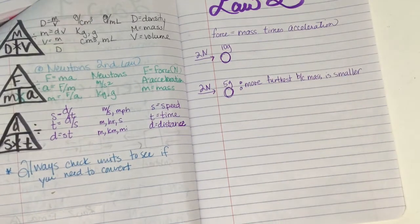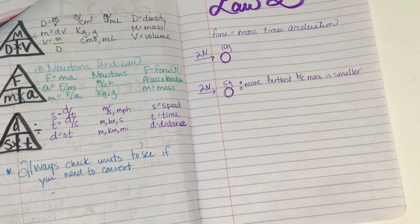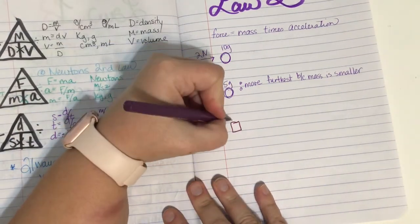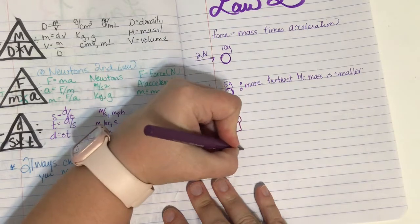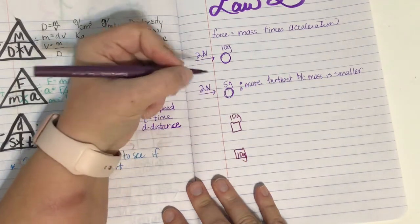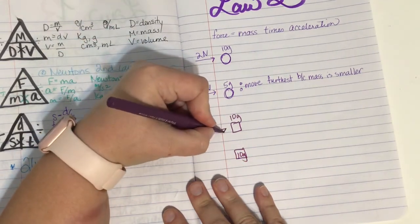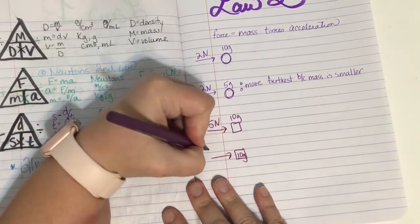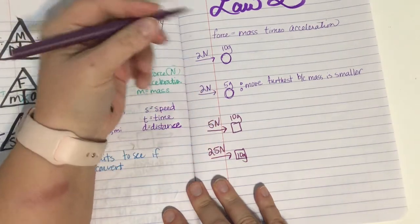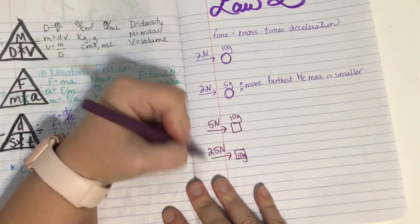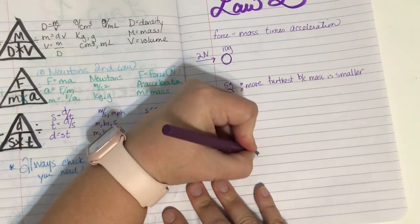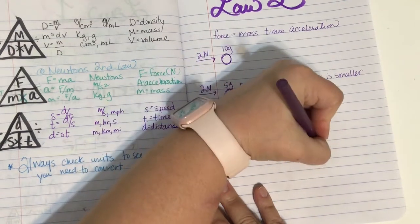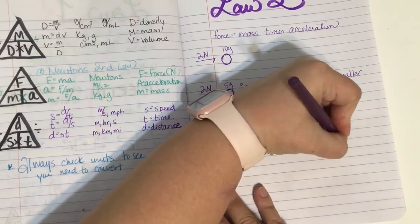Let's look at another way that we can think about this law. So this time I have two boxes and they are both 10 grams. So one there and one here. And this time I put a force of five Newtons and I put a force of 25 Newtons. This time the mass is the same. The only thing that is different is the amount of force being used. This one would move the furthest because a greater amount of force was used.